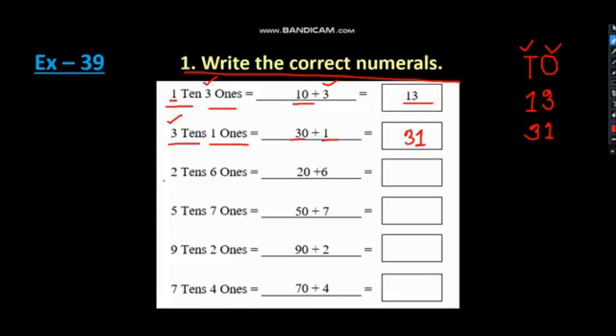Here we can do this just like them. 2 tens, 6 ones is equal to 26. 5 tens, 7 ones is equal to 57. Here, 92. Then, 74. Clear all of you? Very good.